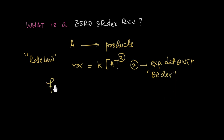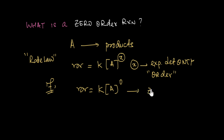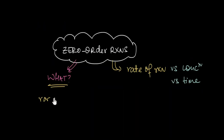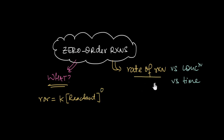Now if it turns out that for a particular reaction the rate can be written as k into [A] to the power zero — that is, if experimentally x is found to be equal to zero — then the order of this reaction is zero and we call it a zero order reaction. A zero order reaction is one in which the order with respect to the reactant has been experimentally found to be zero, so the rate can be written as the concentration of the reactant raised to the power zero.